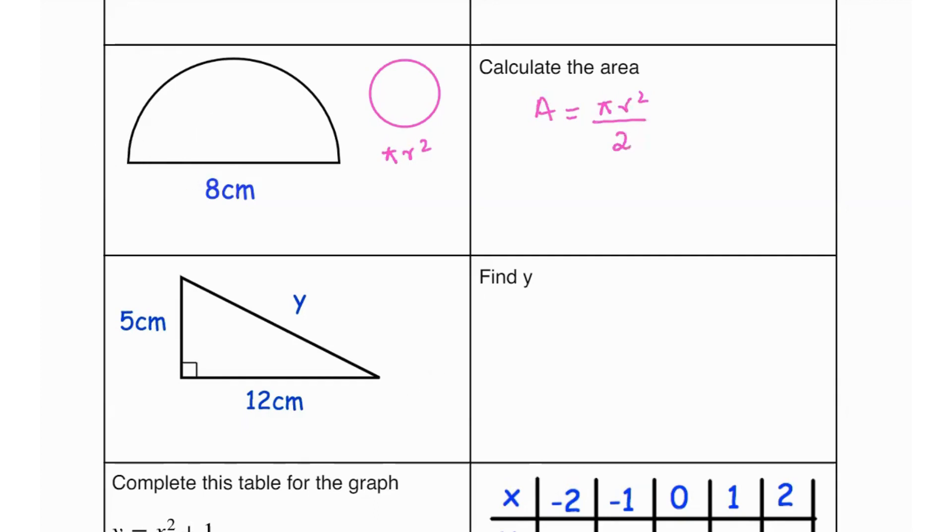Now this length over here represents your diameter, because the diameter passes through the center and goes from one point of the circumference to the other. Half of the diameter is your radius which over here is going to be 4. So radius is 4. We substitute this in the formula: pi times 4 squared over 2. 25.13 centimeters squared.